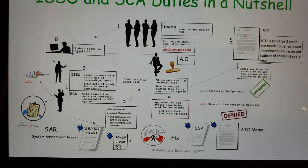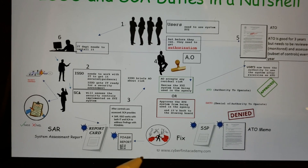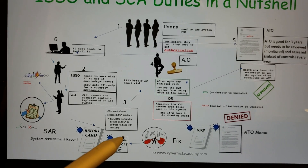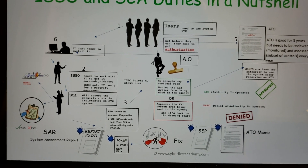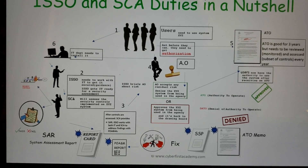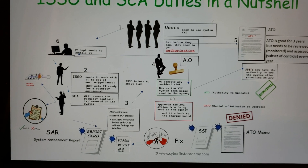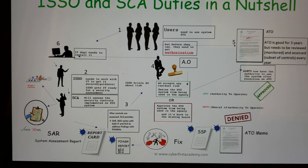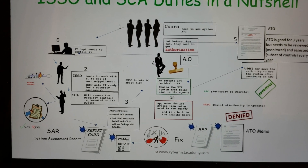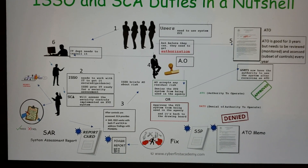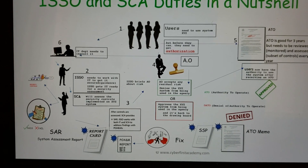If the findings cannot be fixed in time, a POA&M — Plan of Actions and Milestones — is created. The POA&M lists those unfixed findings along with the costs associated with fixing them and the timeline for when they will be resolved.